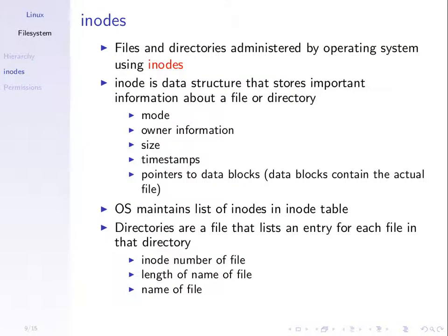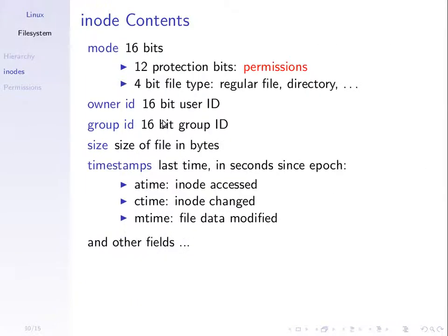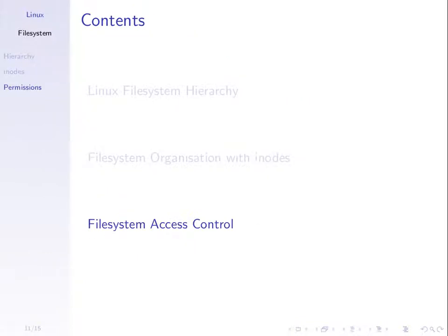The inode contains what we call the mode, which is split into two parts. The mode is 16 bits — the first 12 bits are protection bits, and the next four bits indicate what type of file it is: a normal file, a directory, or other special files. We'll focus on the protection bits, specifically the first nine, which specify the permissions or access rights that users have on that file.